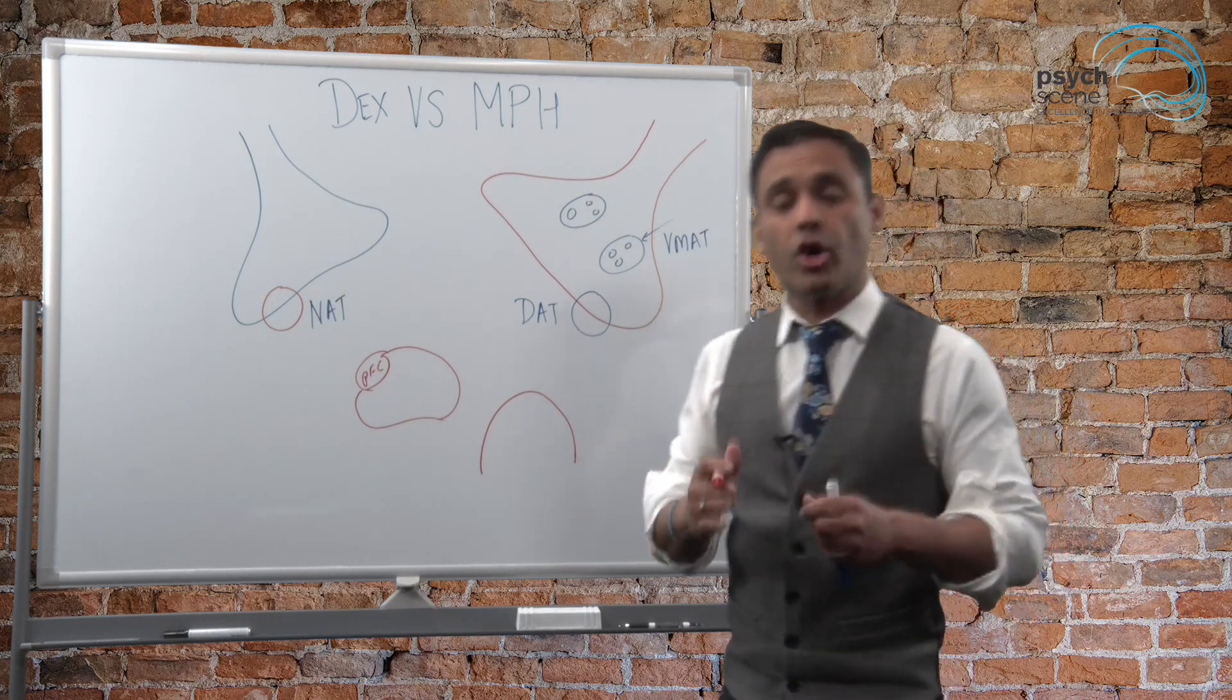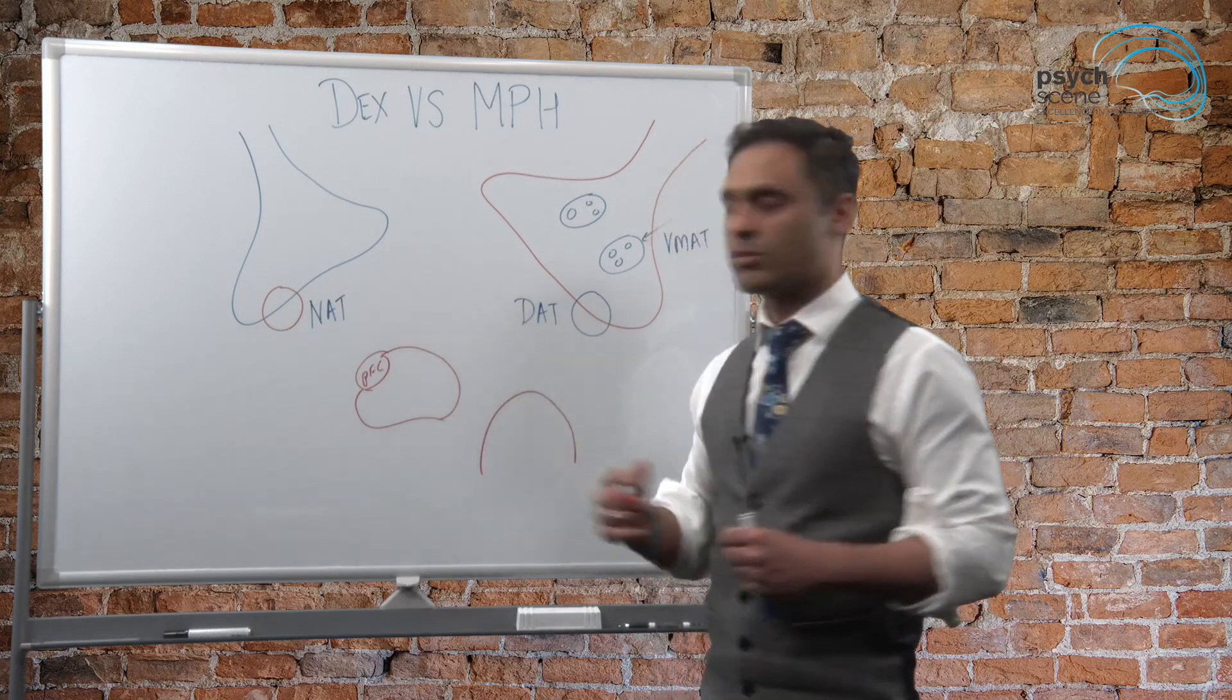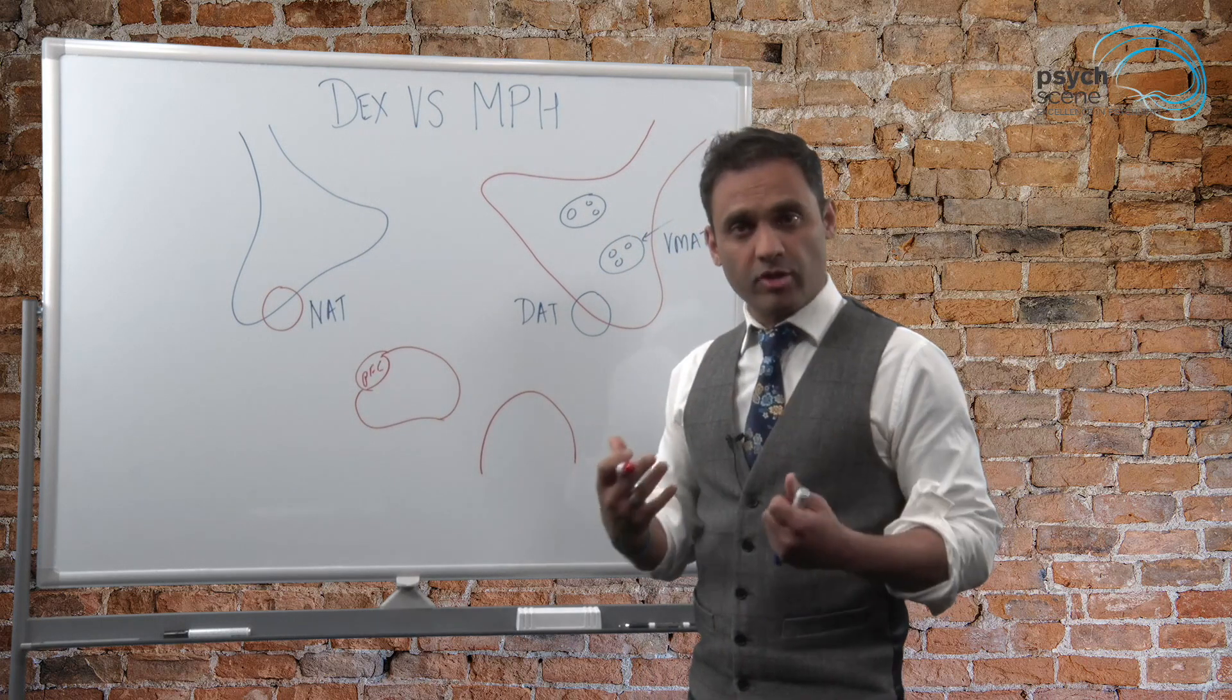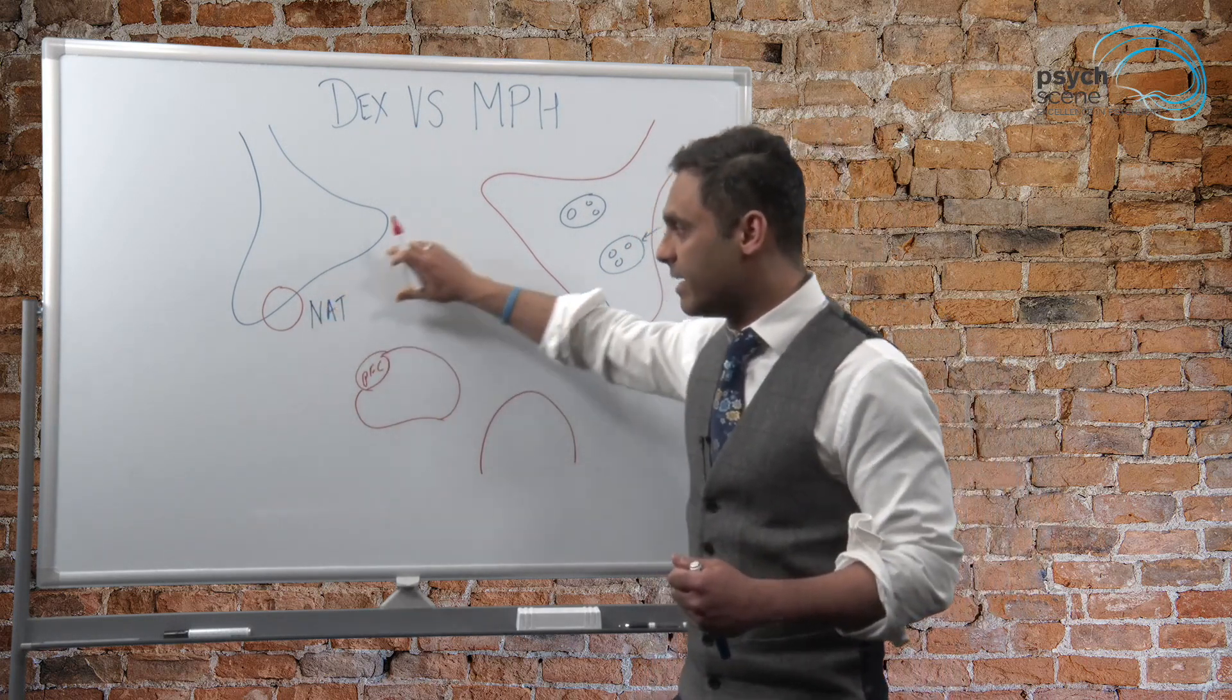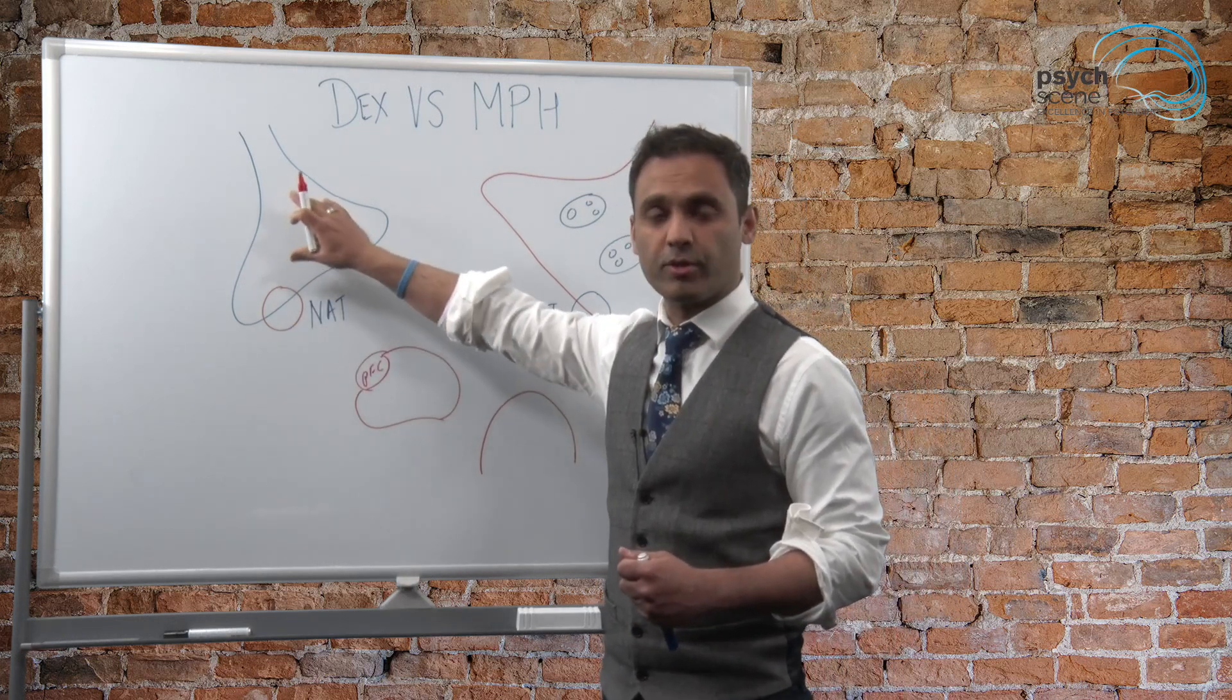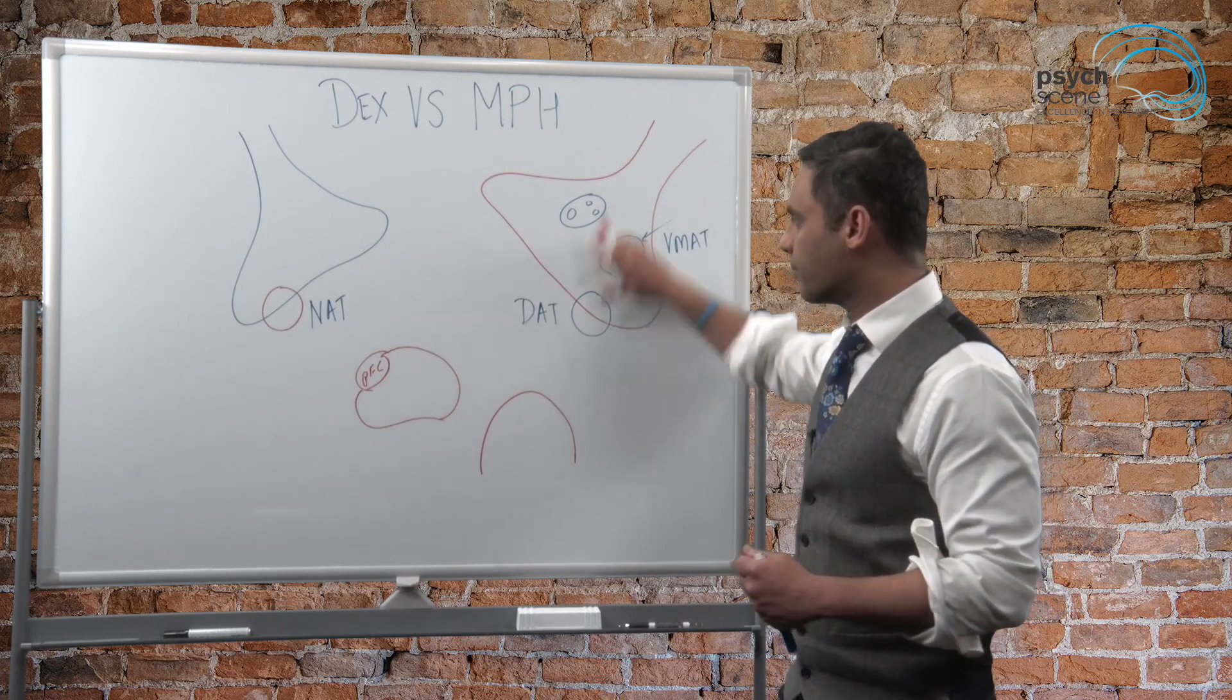So when we think about methylphenidate, it is basically a non-competitive inhibitor of NAT and DAT. What that means is it will inhibit NAT, the noradrenaline transporter and the dopamine transporter by inhibiting it, it prevents the uptake of noradrenaline into the presynaptic neuron. It prevents the uptake of dopamine into the presynaptic neuron.